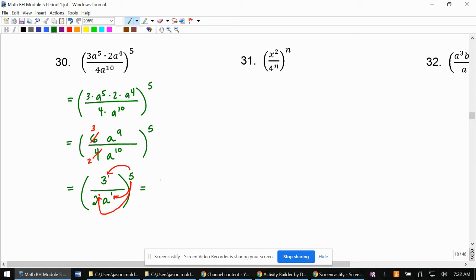All right. So we end up getting 3 to the fifth over 2 to the fifth, a to the fifth. Each one gets a 5, or you could think of it as multiplying 5 times 1, 5 times 1, and 5 times 1.